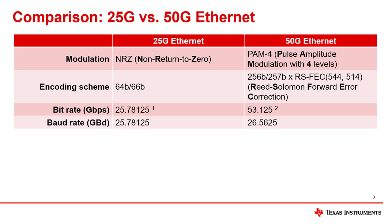The biggest difference between 25 and 50 gigabit Ethernet is the modulation type. 25 gig Ethernet uses non-return to zero, or NRZ modulation, while 50 gig Ethernet uses pulse amplitude modulation with four levels, or PAM4. The important thing to note is that PAM4 doubles the information throughput without doubling the baud rate.